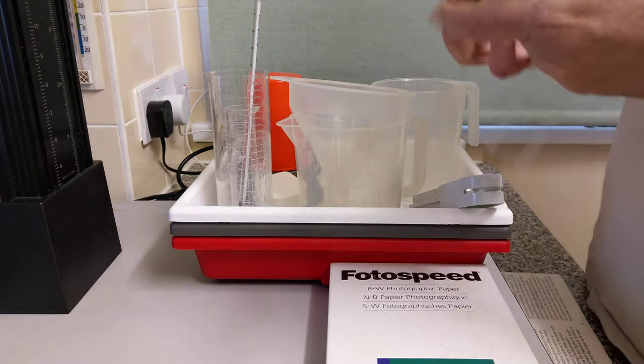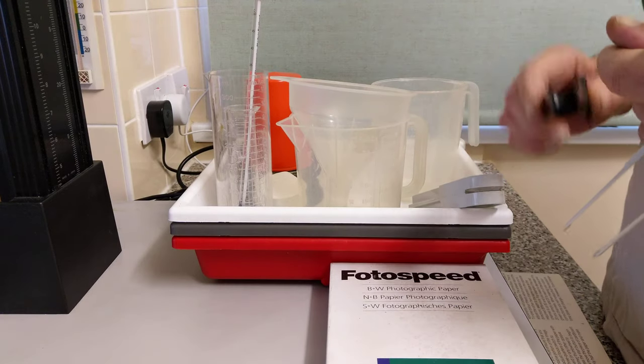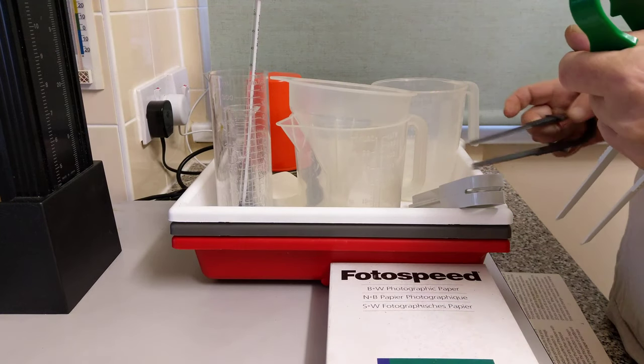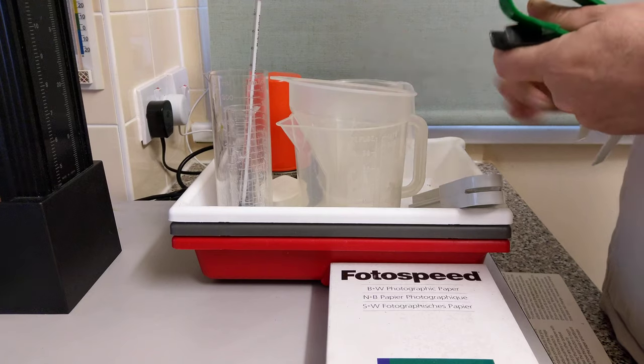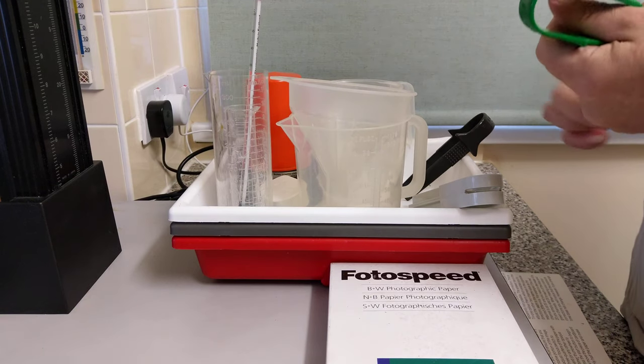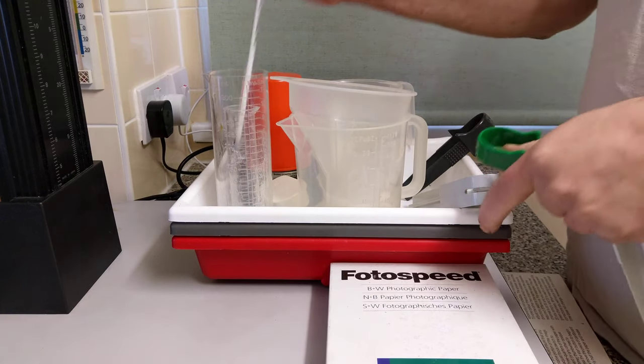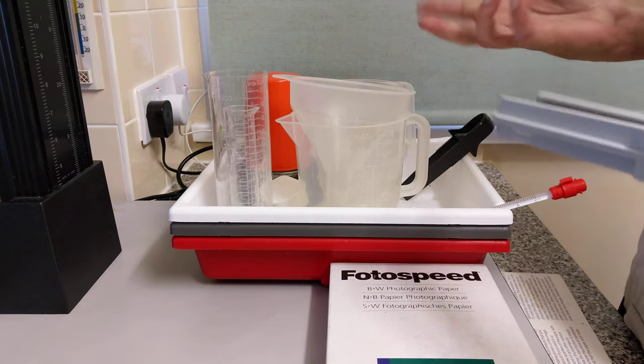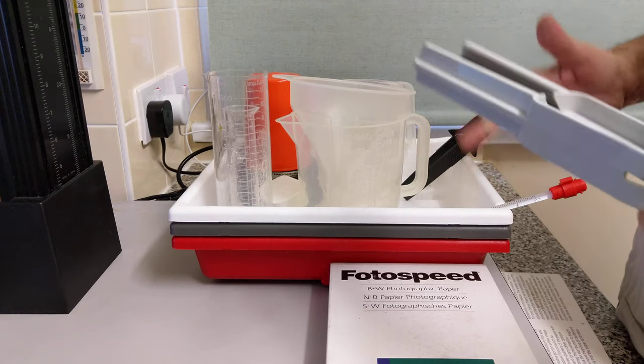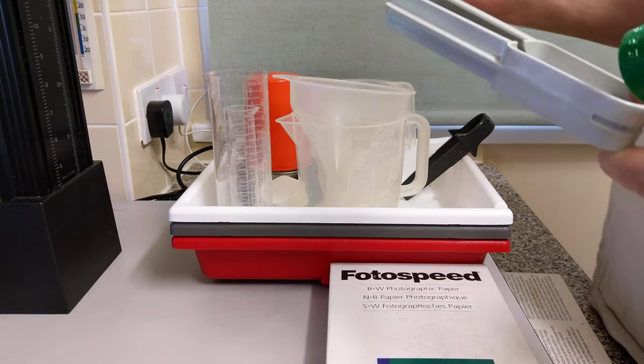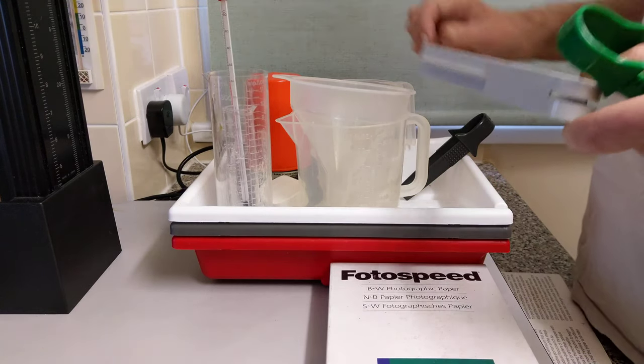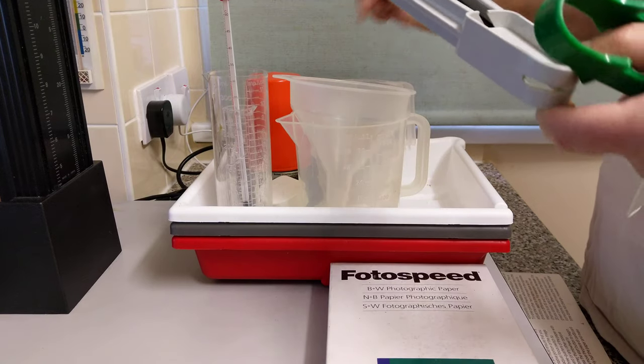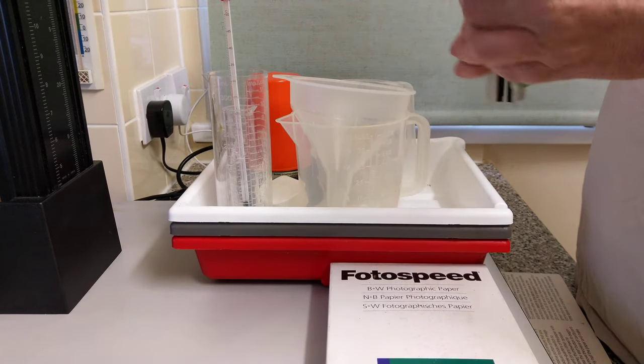A set of tongs. This is used for handling your prints when they're in the developing trays. And these are quite nice because they sit on the side. These trays are quite good because they've got thermometer holders on the side. I wouldn't bother with having three. You could have one in each tray, but I wouldn't bother with that. Just one's enough. Black and white, to be honest, is a room temperature process. Here in the UK, most rooms are near enough 20 degrees.